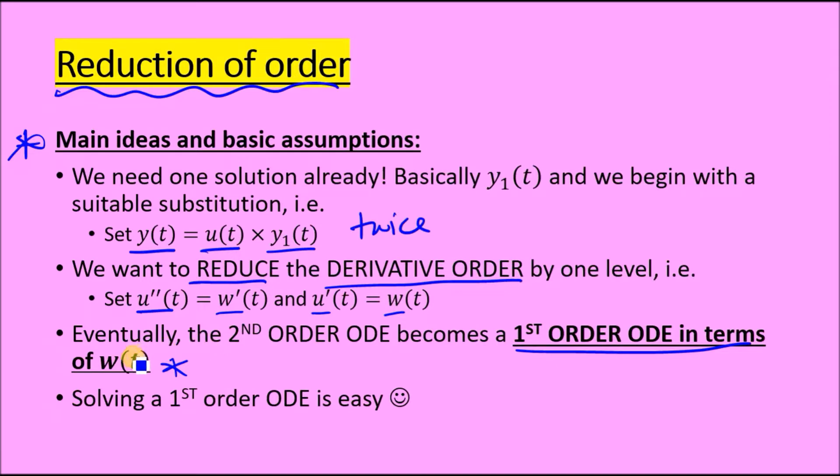When you solve for w, you can easily solve for u because it's a direct one. And when you solve for u, you plug it back in the beginning and you got your solution for y. That's it guys. That's literally reduction of order in a nutshell.